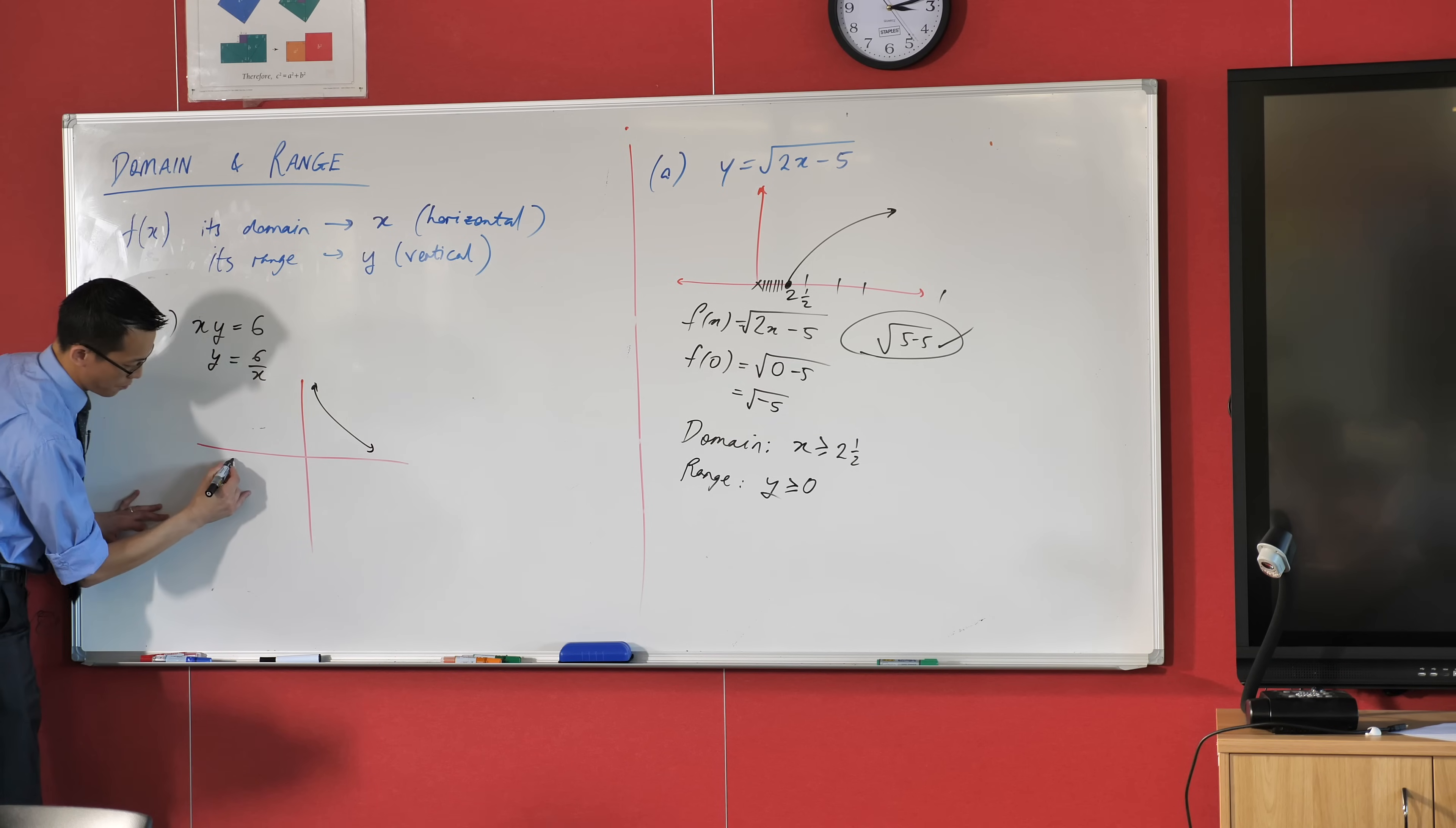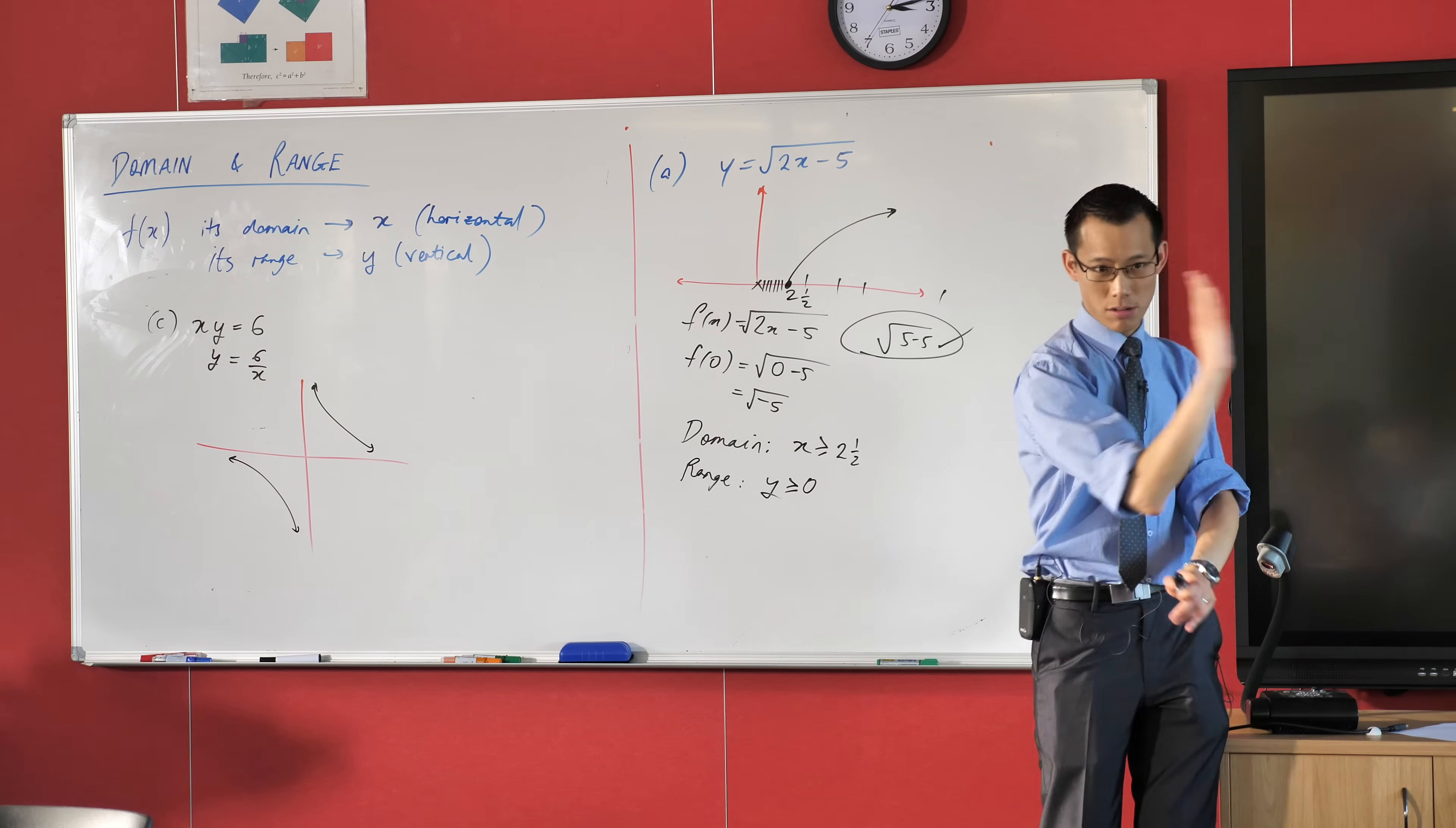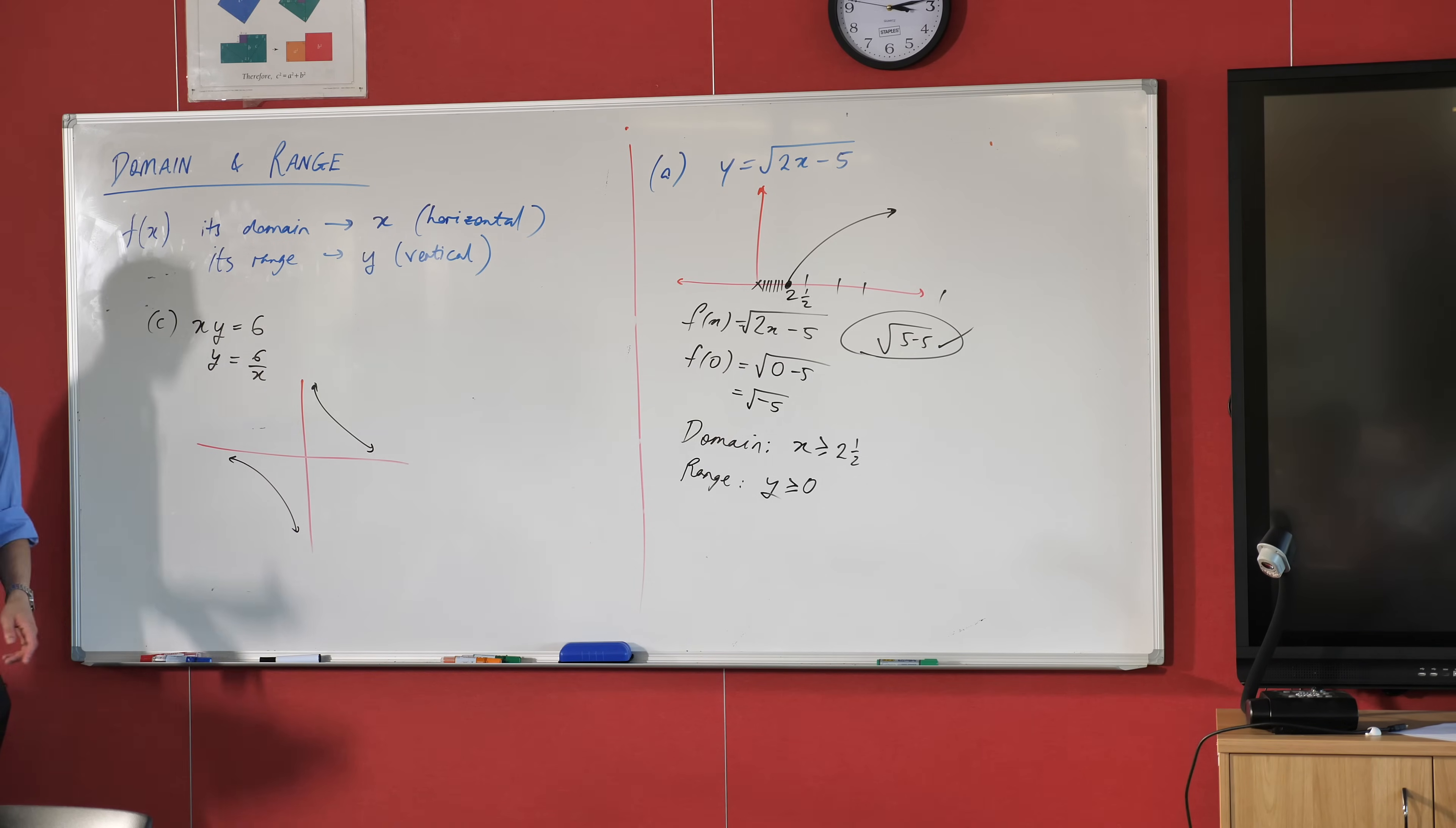xy equals 6, this is the one we're looking at. I think it looks something like this. Now here's where it starts to get more interesting. What values of x - let's just think about x for a minute, that's horizontal - what values of x can we put in? What values can't we put in? Anyone to suggest? Hold on a second, there's a lot in that answer.